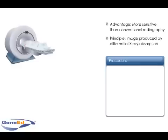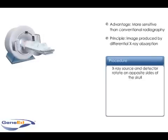In CT scanning, an X-ray source is rotated 180 degrees around one side of the skull, while the X-ray detector is rotated around the opposite side.